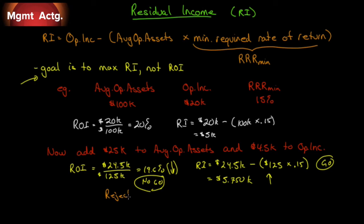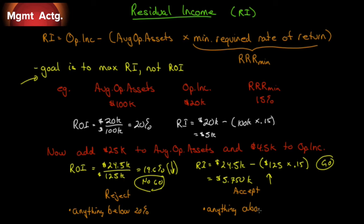So we have a reject under ROI and an accept under residual income. The manager rewarded on ROI would reject anything below 20% — even though the minimum required rate of return is only 15%. A manager using residual income is likely to accept anything above the minimum required rate of return of 15%. So anything above 15% is accepted under RI, whereas the ROI manager rejects anything below 20%.